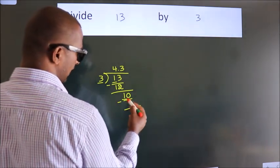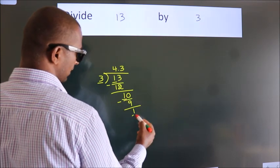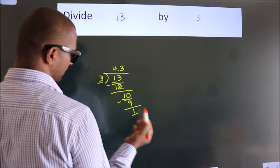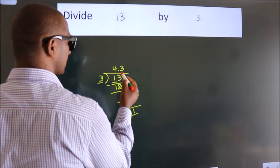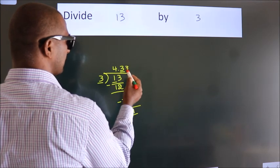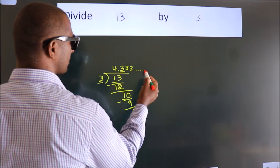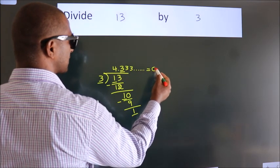We had 1 here, and we got 1 again. That means this number keeps on repeating. So this is our quotient.